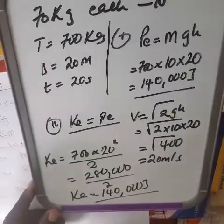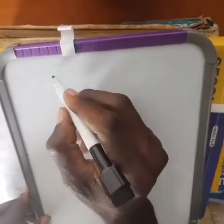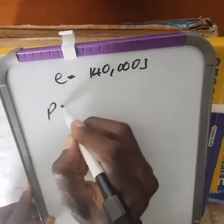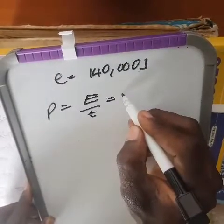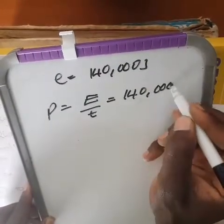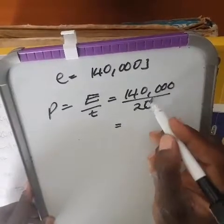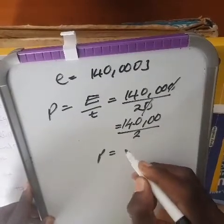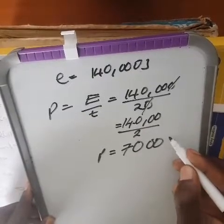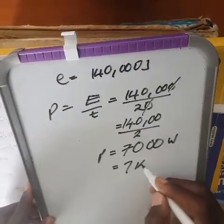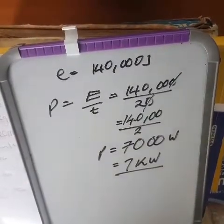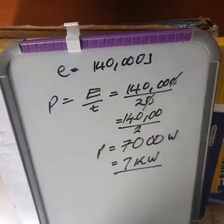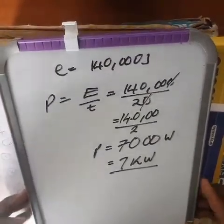Now let's find power. Energy is 140,000 joules and time is 20 seconds. Power = energy / time = 140,000 / 20 = 7,000 watts, which we can also write as 7 kilowatts. Thank you for watching the video — share, comment, don't forget to like the page and invite more people. Thank you so much, have a blessed day.